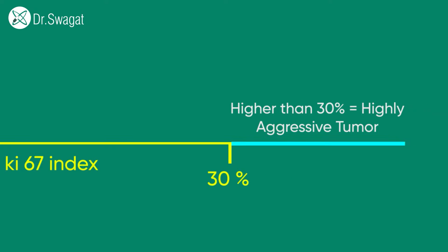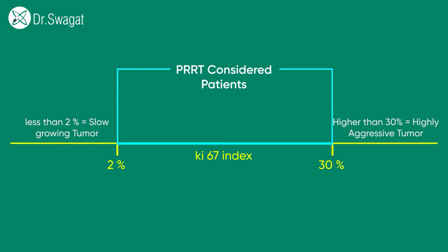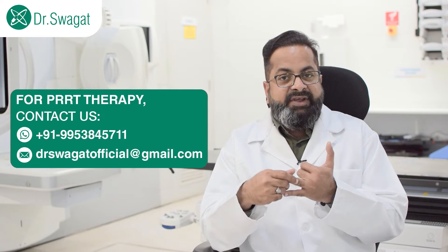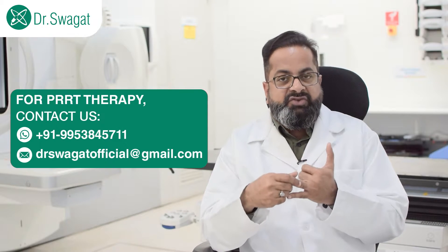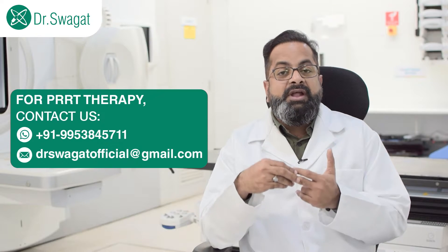When the index is more than 30 percent, that means a grade 3 tumor — a highly aggressive tumor to be treated as a high-grade cancer with chemotherapy and other systemic treatments. PRRT is considered for grade 2 tumors, where the KI-67 or MIB index is between two and 30 percent, when the tumor is progressing or at an advanced stage that cannot be addressed through surgery, and when associated symptoms are not responding to conventional treatment. In this condition, your physician may consider referring you for PRRT therapy.